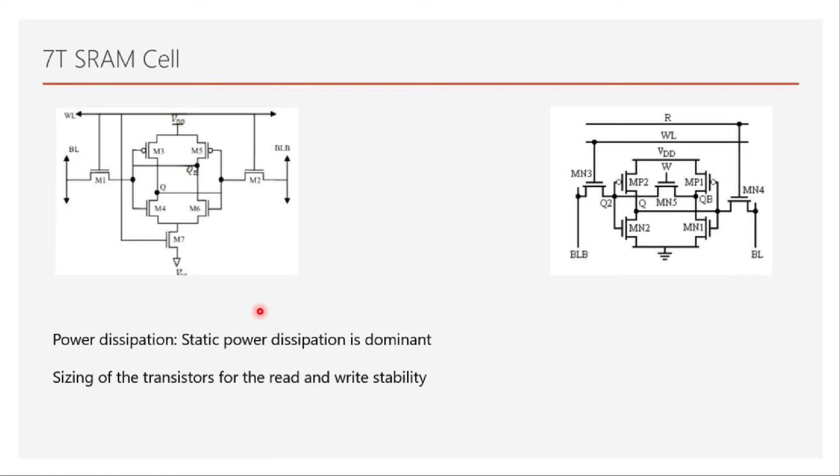So in that constraint we know that this access transistor has to be a little weaker than this driver transistor, and similar to this has to be weaker than that of this access transistor. So those conditions make us to resize - there is a sizing constraint. The ratio of the sizes of these transistor has to be met.